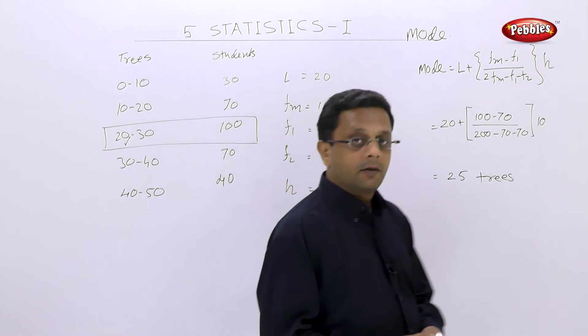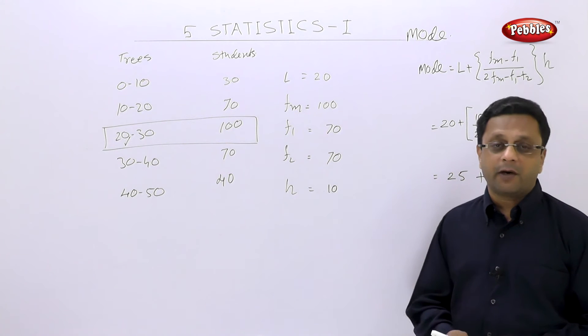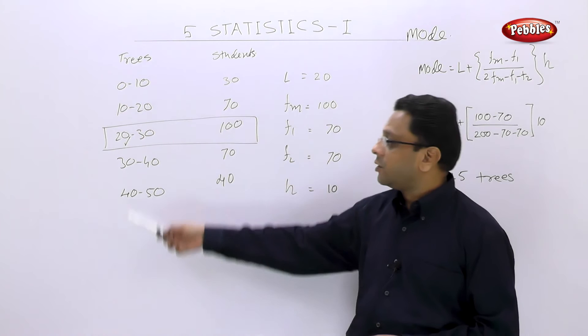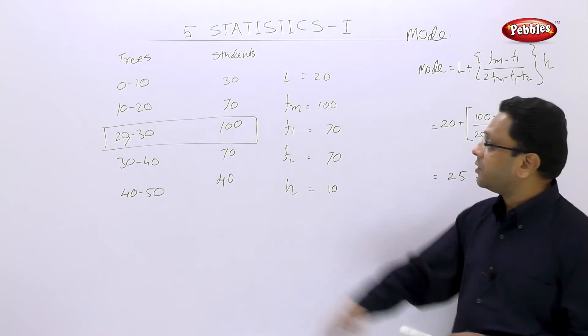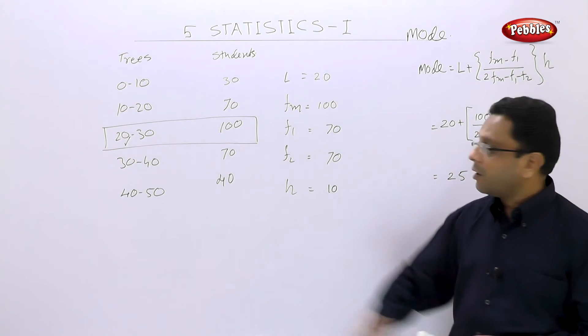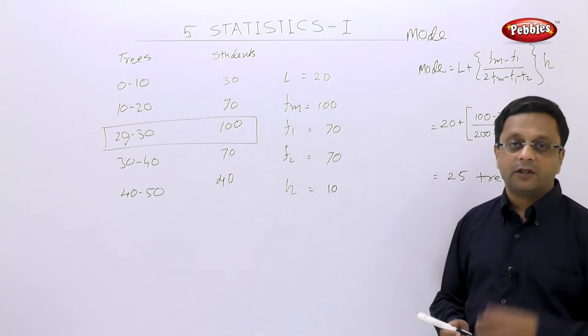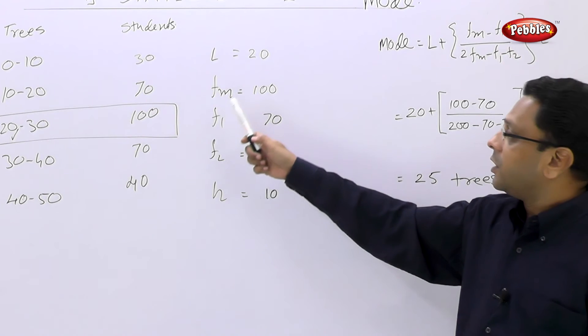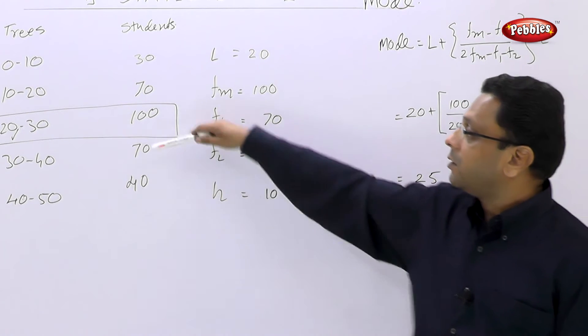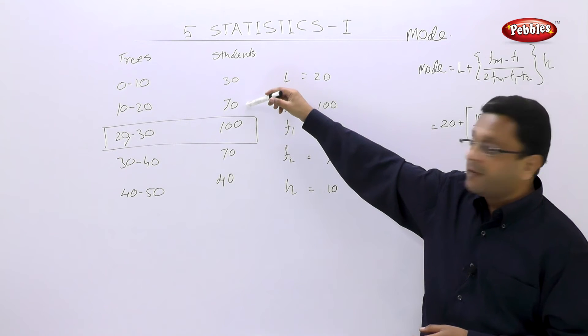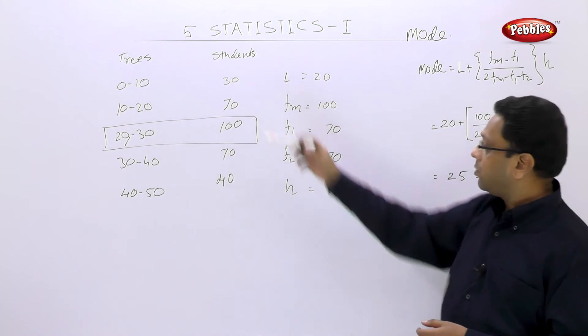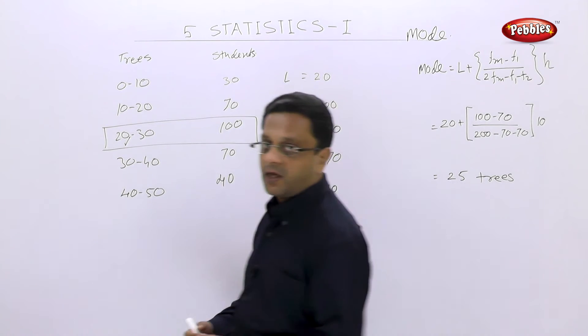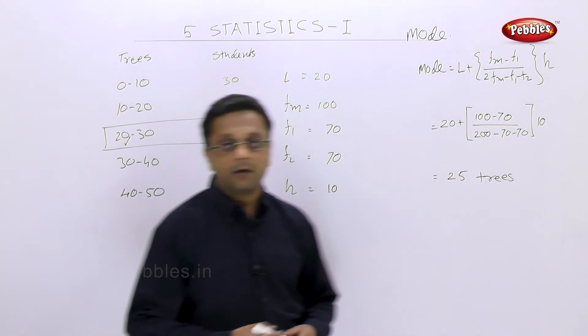So I don't think we require any more examples in this. This is so simple. I am again explaining this. Check what is the class. Then frequency is given. Mark the class with the maximum frequency, which is called as the modal class. L is the lower limit of the modal class. Fm is the frequency of modal class. F1, frequency of the pre-modal class, that is the one step above. F2 is the post-modal class frequency. H is the class difference. And then substitute everything in this formula and you will get the mode.